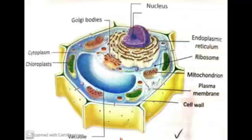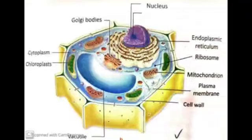In some unicellular organisms like amoeba and paramecium, they have food vacuoles which contain food that the organism has consumed. Besides food vacuoles, they also have contractile vacuoles which play a very important role in expelling excess water and some waste materials from the cell.